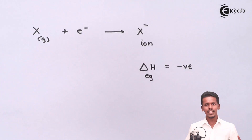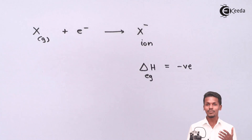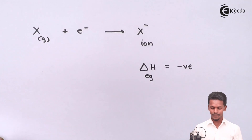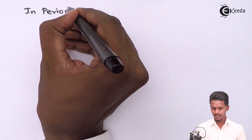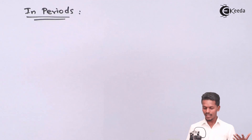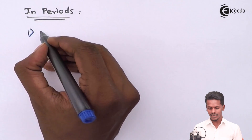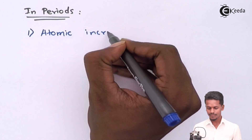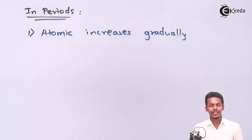Let us talk about the trend and the factors that affect electron gain enthalpy. Looking at the trend in periods: the atomic number increases gradually, and electrons are being added in the same shell, because of which the effective nuclear charge goes on increasing.